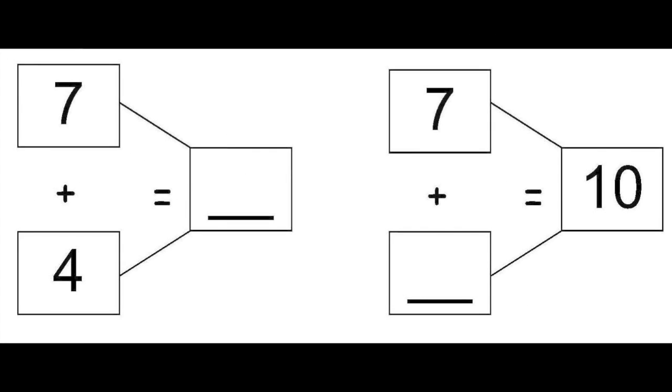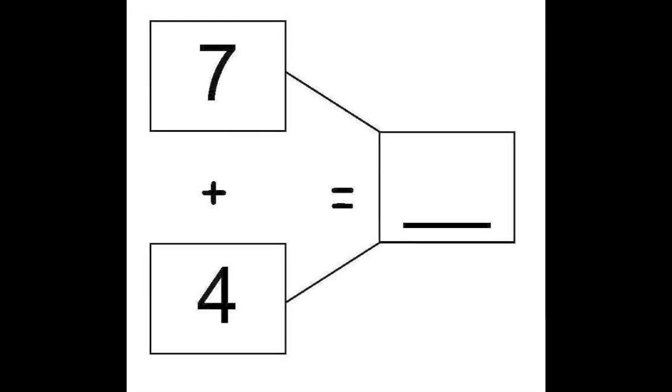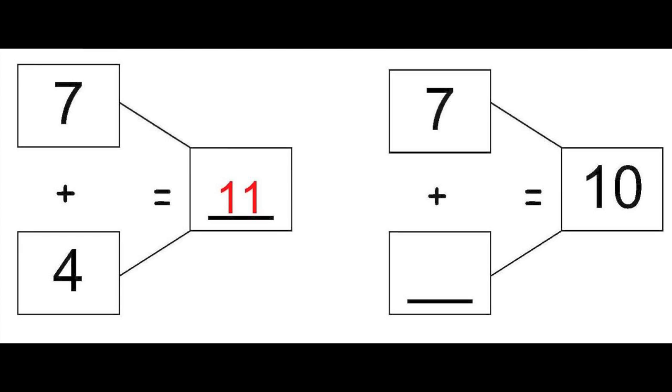Now let's look at the bottom of the same page. On this first problem, we have two numbers on the left that we need to add together to get the solution that we will put on the right. So what is 7 plus 4? It's 11. On this next problem, we have one number on the left and the solution on the right. So we need to figure out what we need to add to 7 to get to 10. 7 plus 3 equals 10.